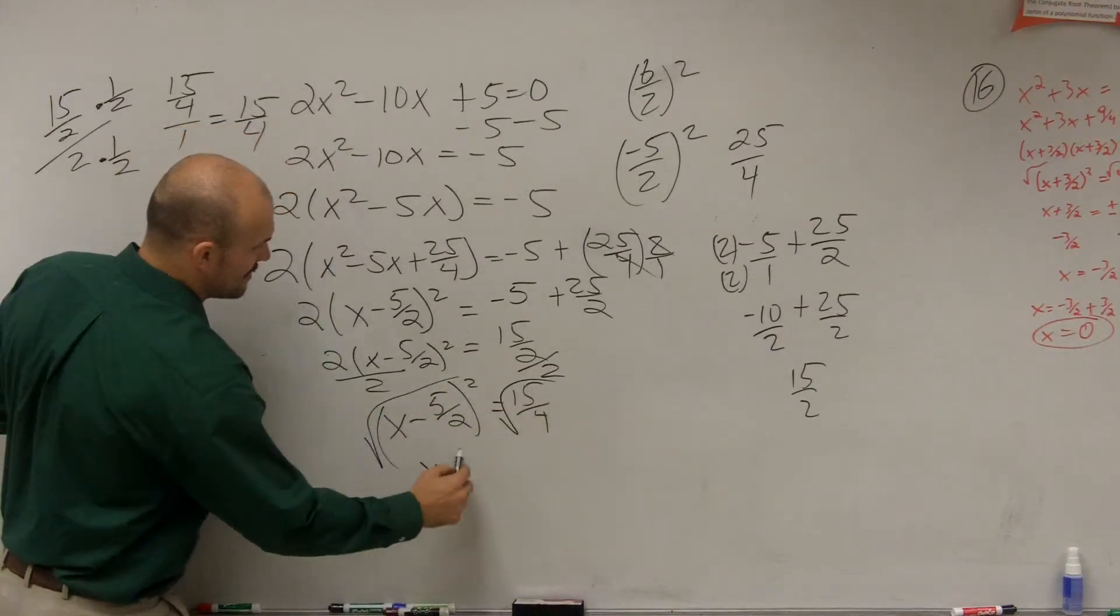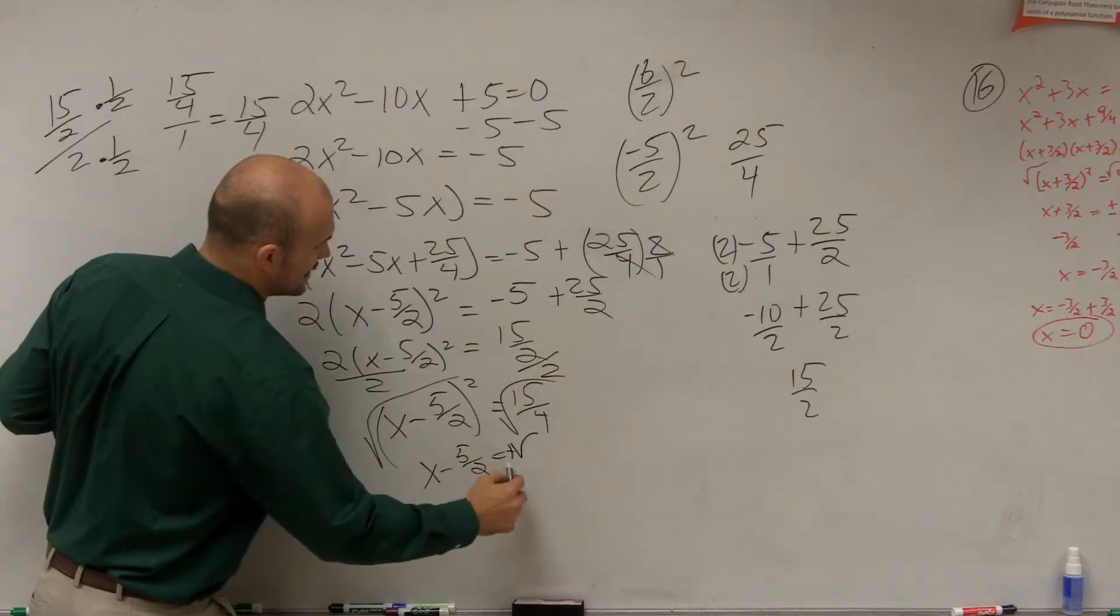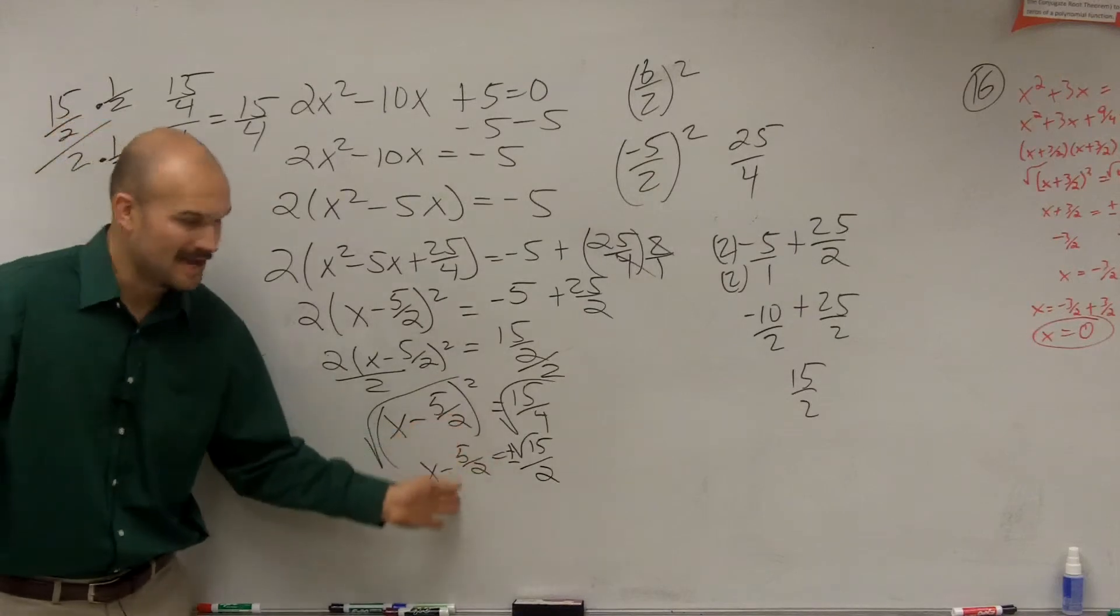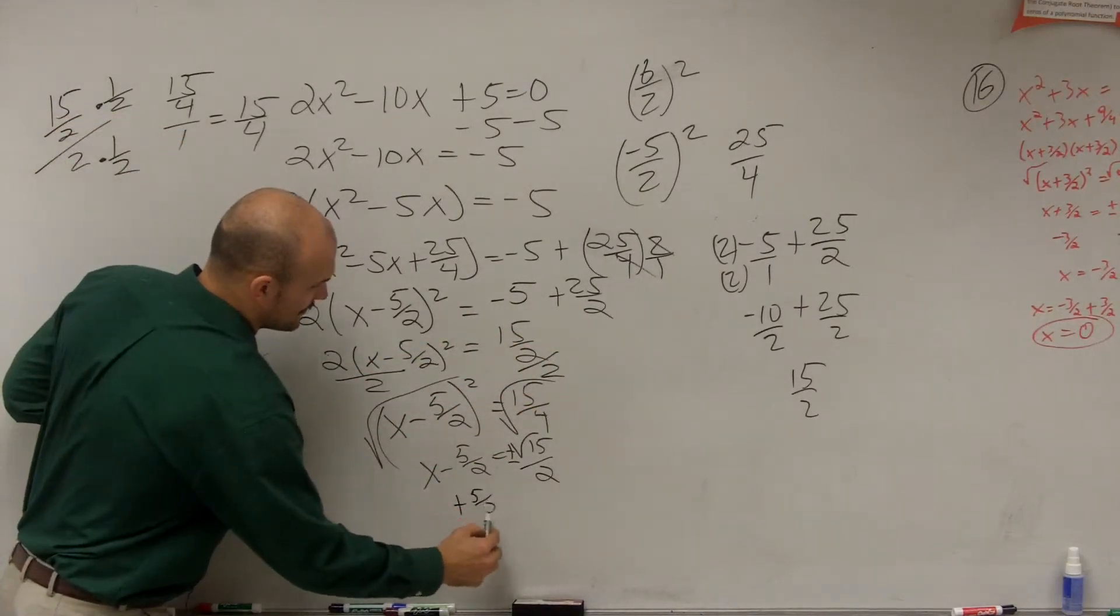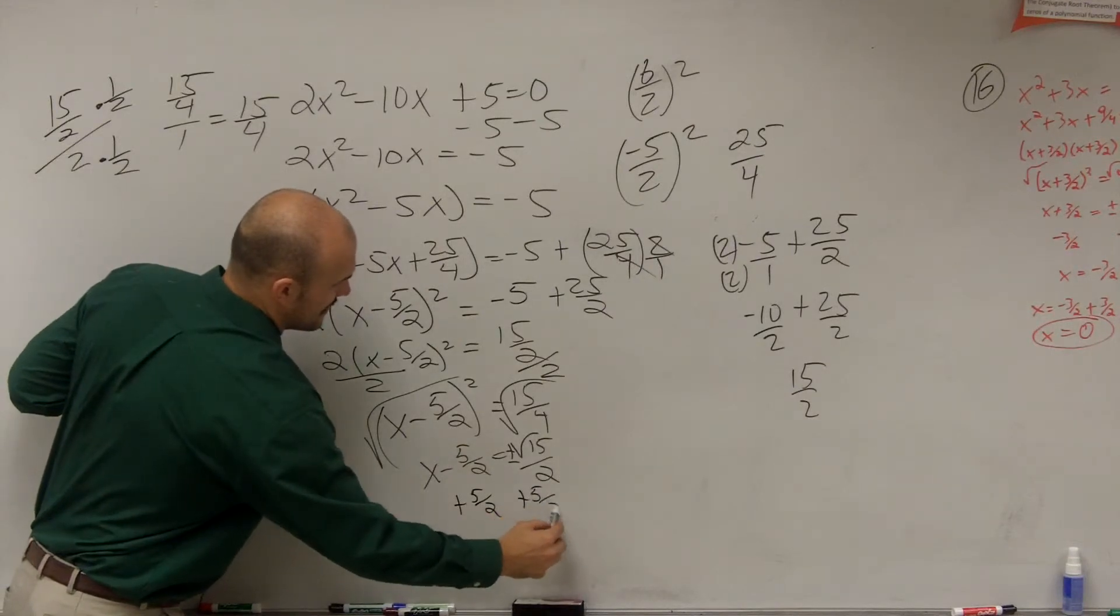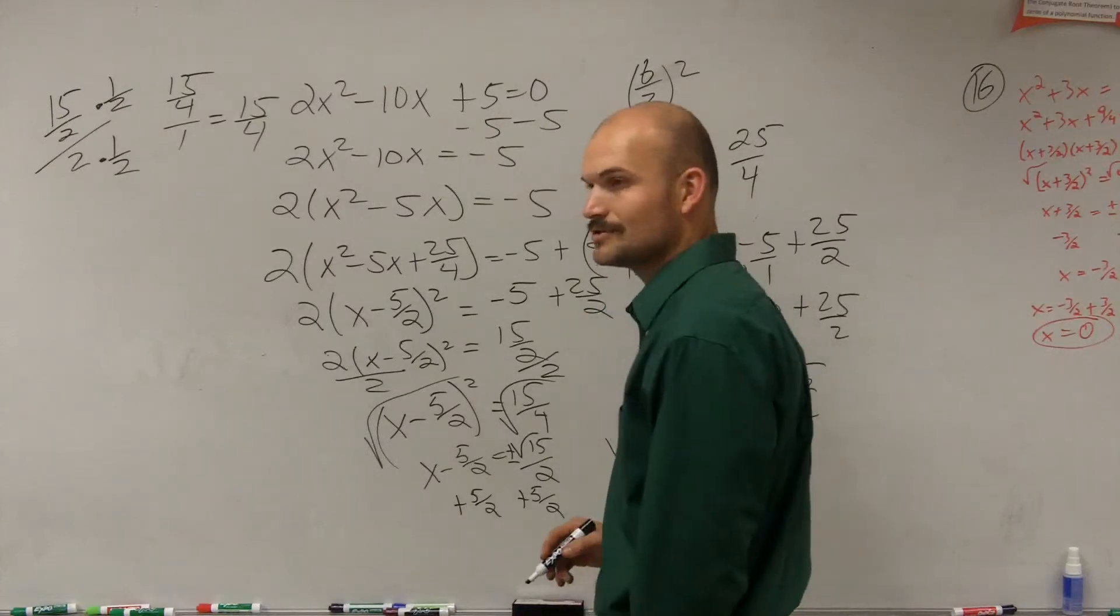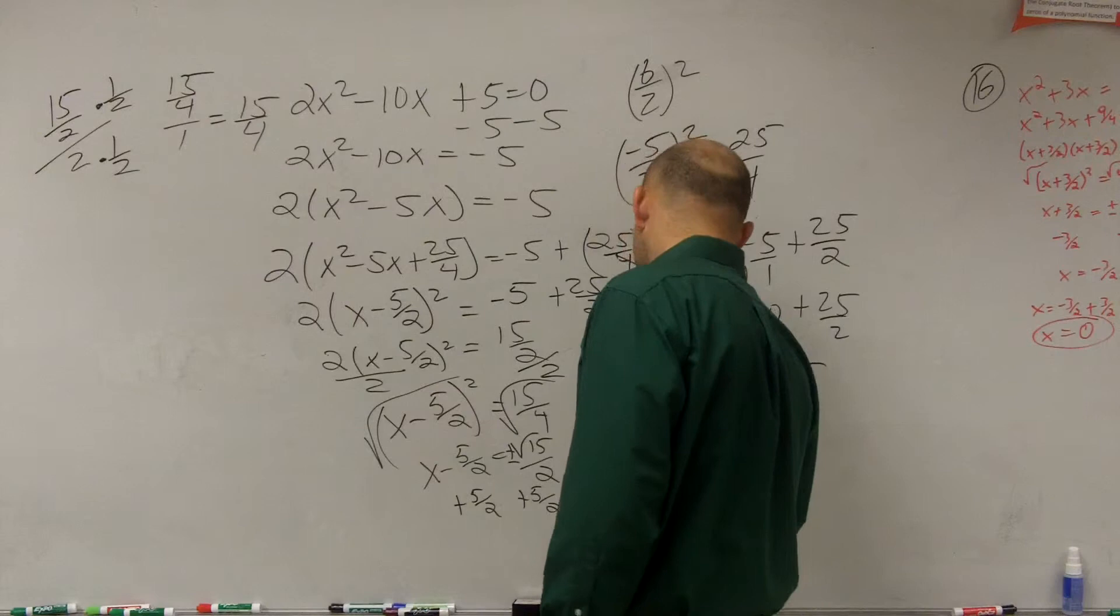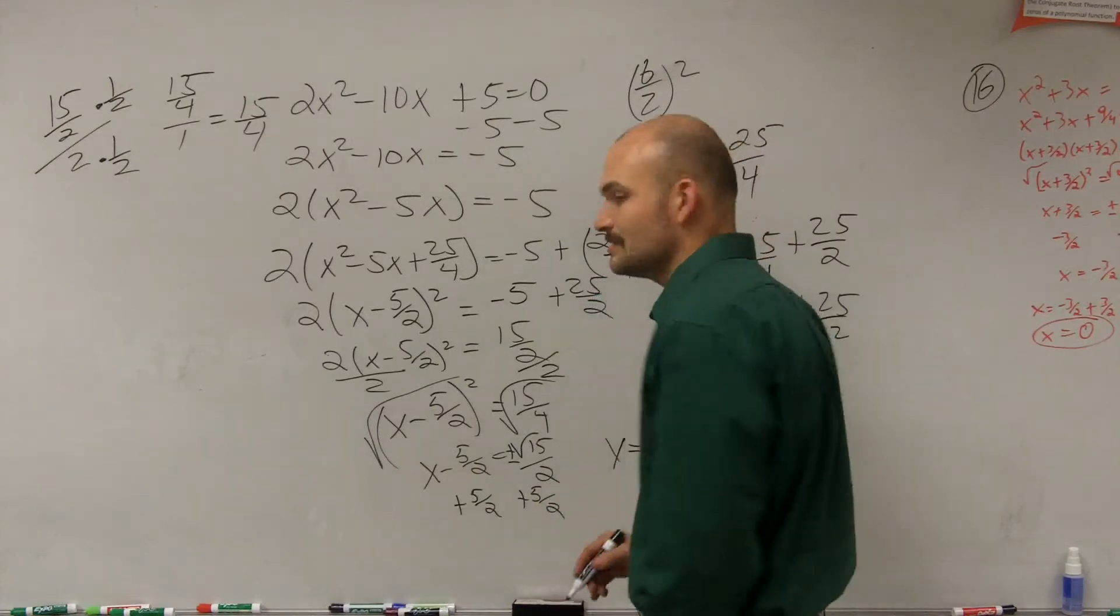So we have x minus 5 squared equals 15 divided by 4. Then we now need to take the square root. Okay, so you have x minus 5 halves equals the plus or minus the square root of 15 divided by 2. Then you add the 5 halves to the other side.